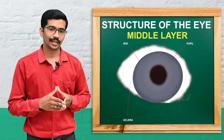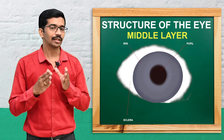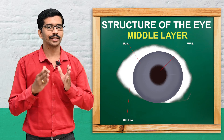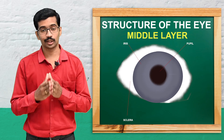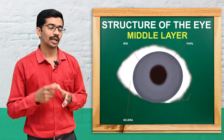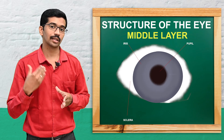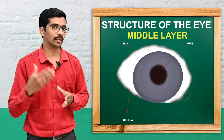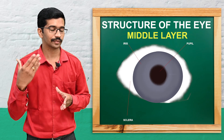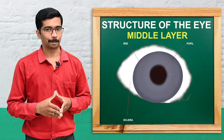The lens is a highly elastic, circular, biconvex body through which light passes and which focuses it onto the retina.